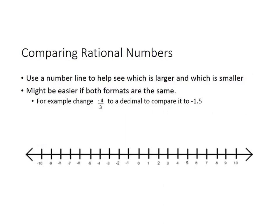Today we're going to work on comparing rational numbers. It helps if we use a number line to see which is larger and which is smaller. It might be easier if both formats are the same. For example, it would be easier if we changed the fraction negative 4 thirds to a decimal to compare it to negative 1 and a half. So if you're trying to compare fractions to decimals, it would be easier to change them into the same format first.